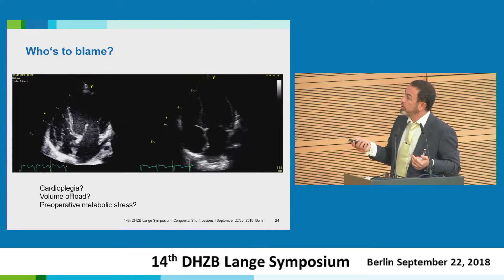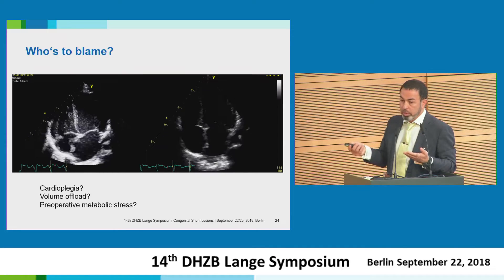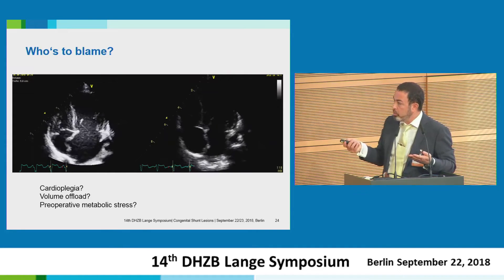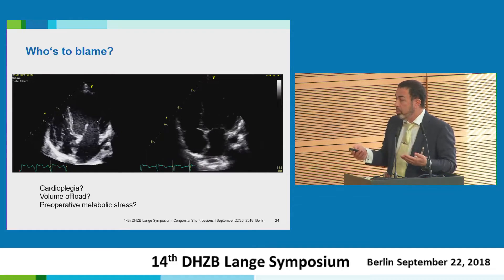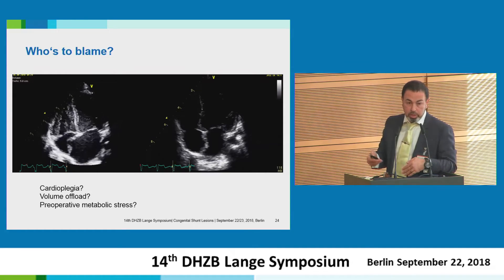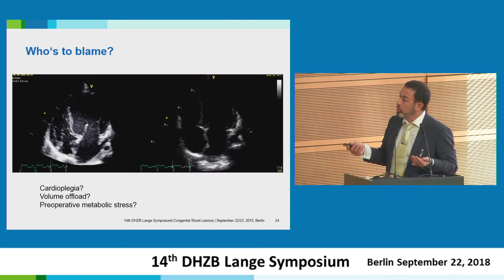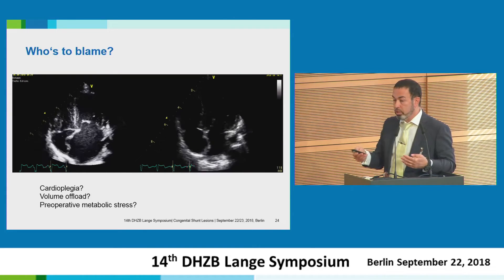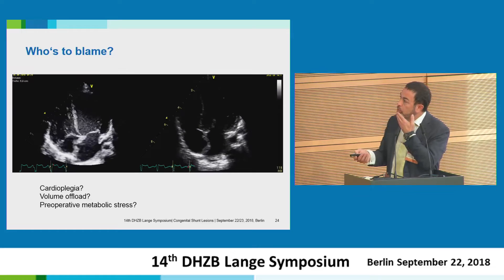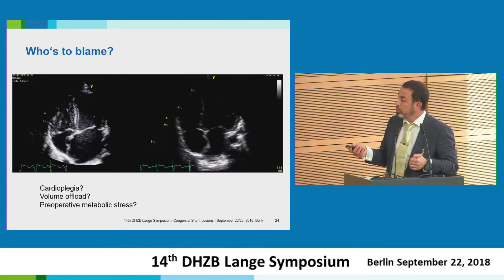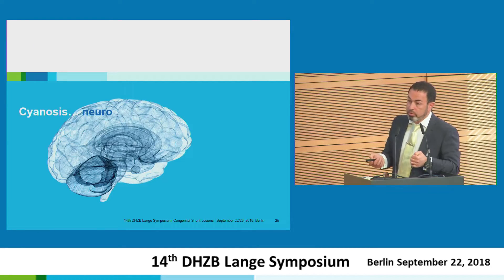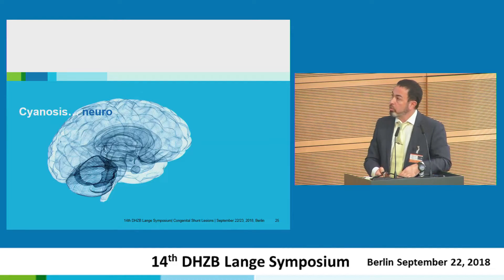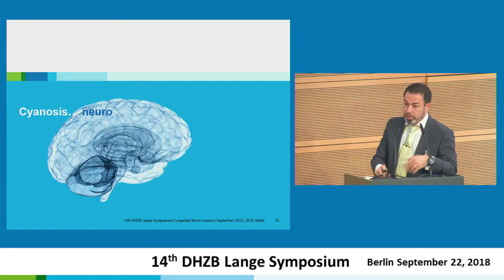Therefore, the question is: who is to blame? Cardioplegia — we can do something about this. Or we cannot avoid it — volume load, we need it, we want it, we go for it. Or probably preoperative metabolic stress that we can find already before the operation. Can we go a little earlier for treatment and probably preserve ventricular function? And then a couple of findings regarding the burden of cyanosis.